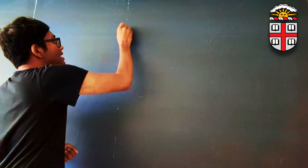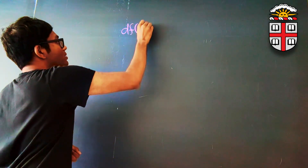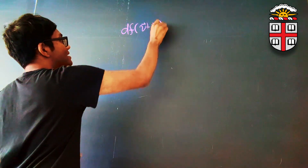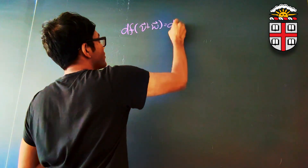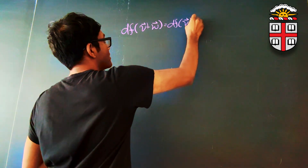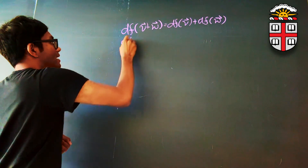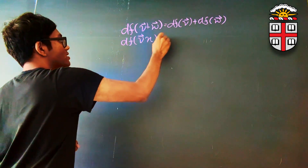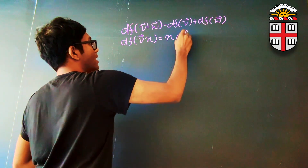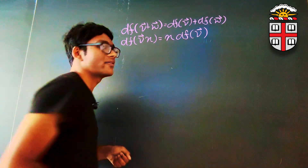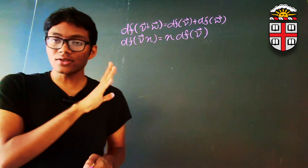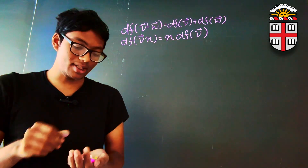Now first, recall that these differential co-vector fields also satisfy the linearity properties associated with regular co-vectors. In other words, df applied to two different vectors is the same thing as applying df to each vector separately and adding their sum. Likewise, the second linearity property is scalar multiplication — you can just factor out a scalar n and apply the co-vector field to your vector and still get the same answer.